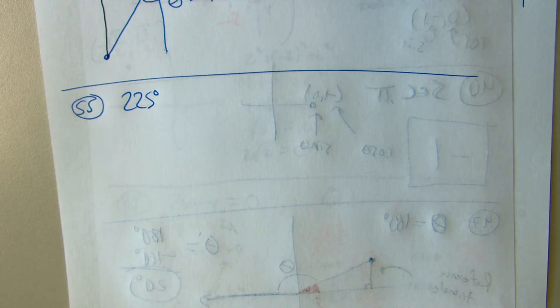225 degrees gives us an angle, and it wants to know the sine, cosine, and tangent without using a calculator.